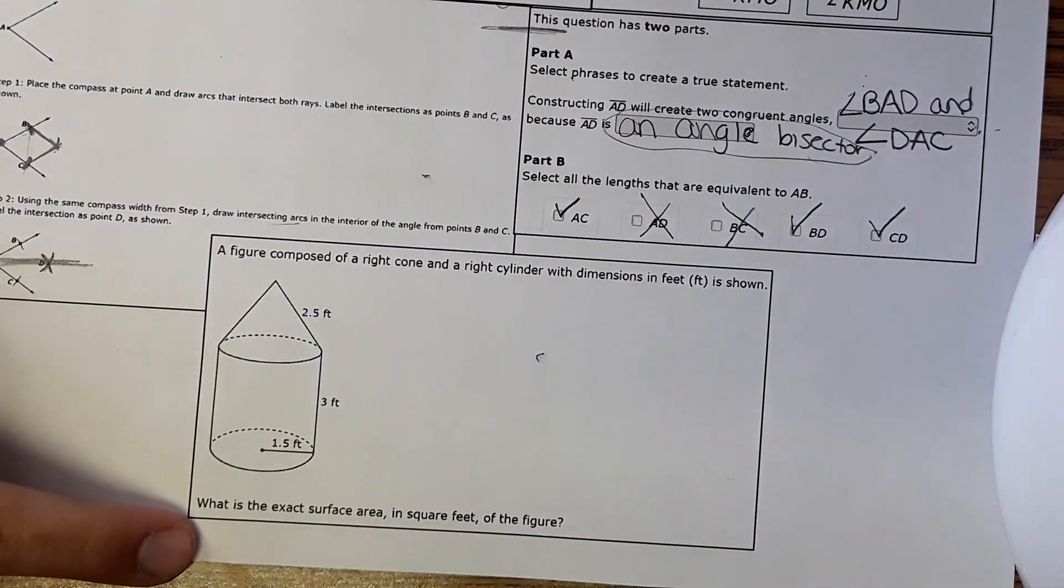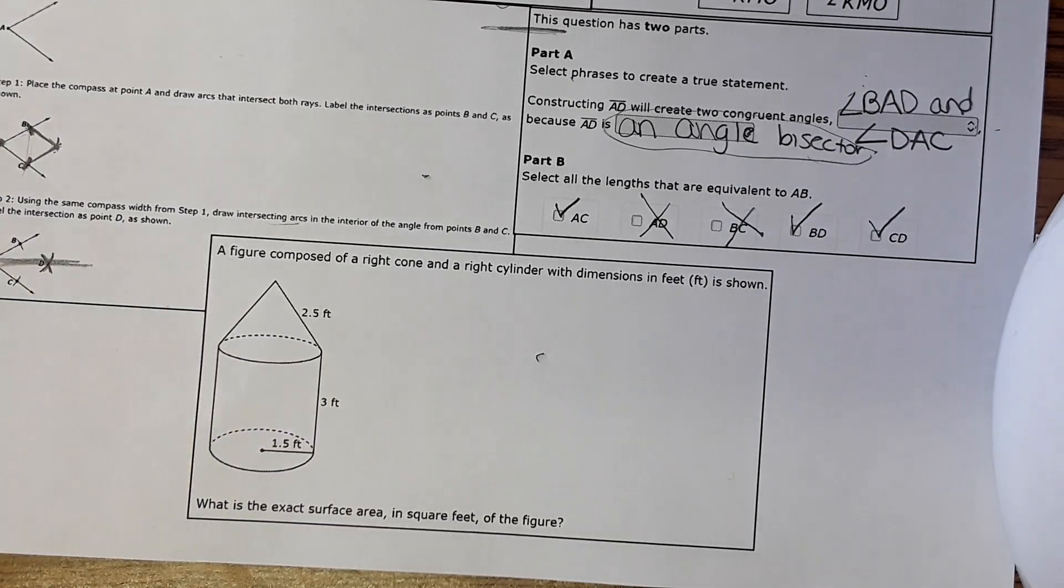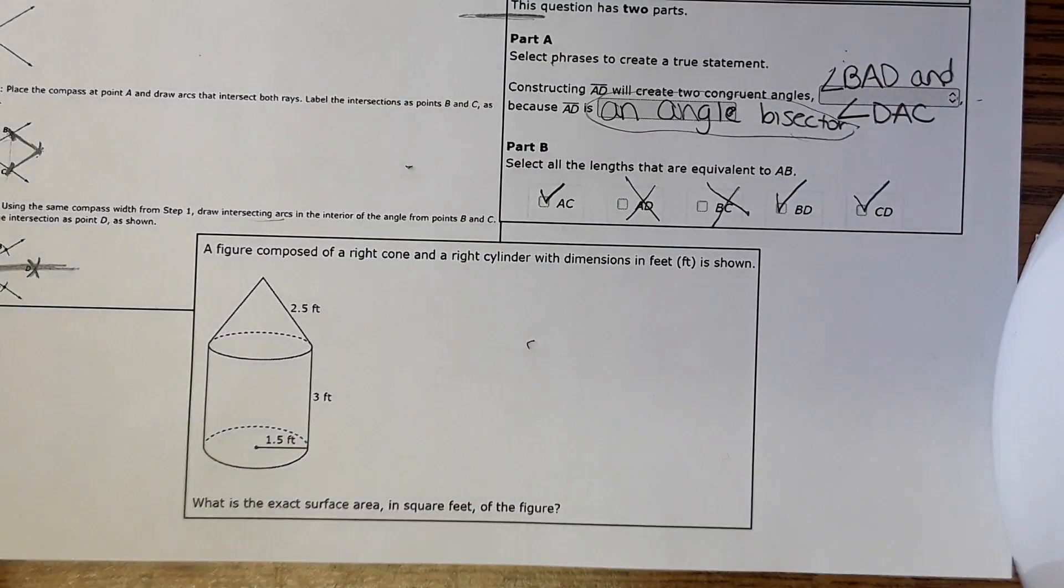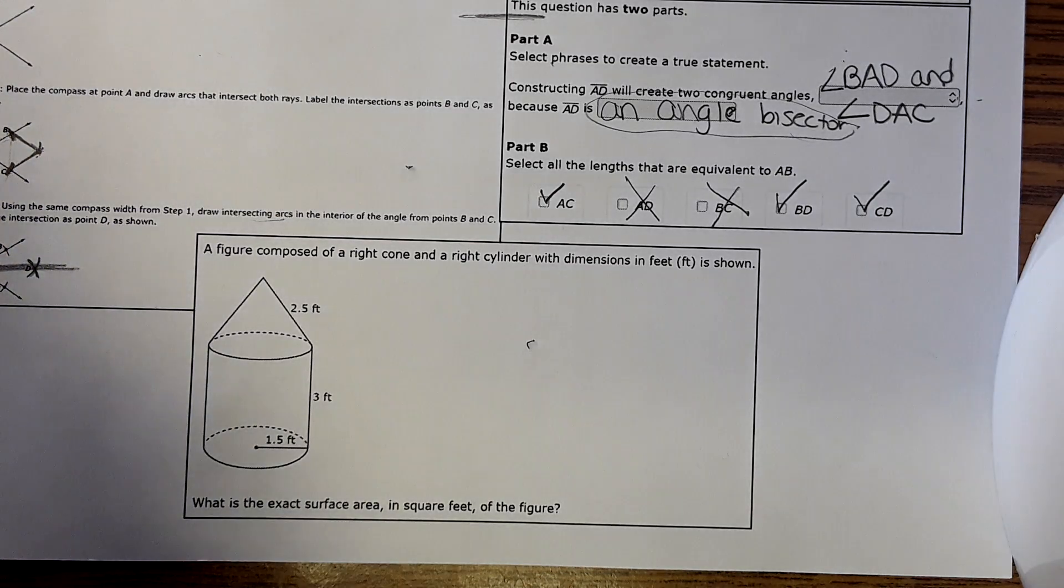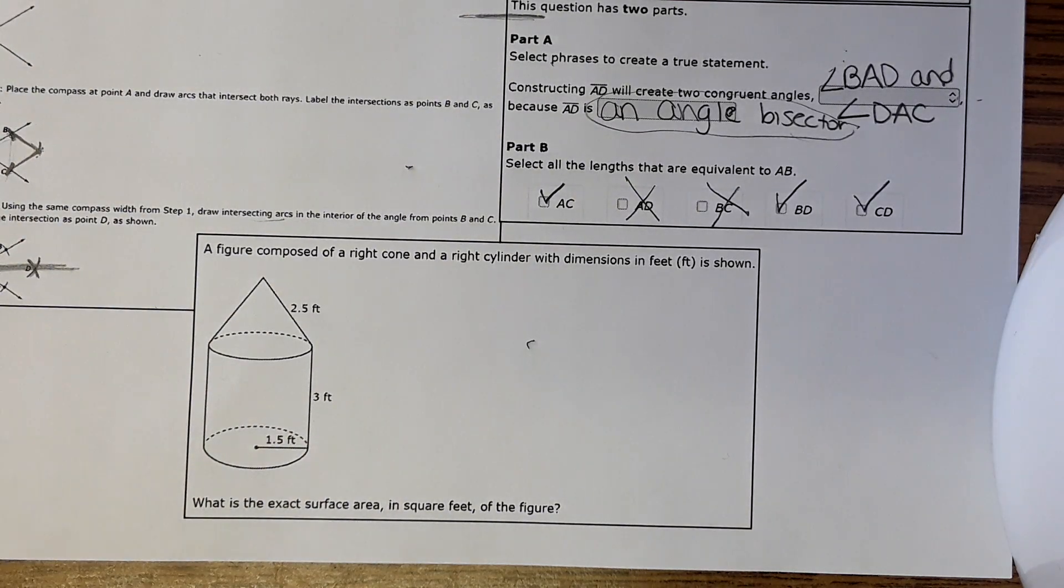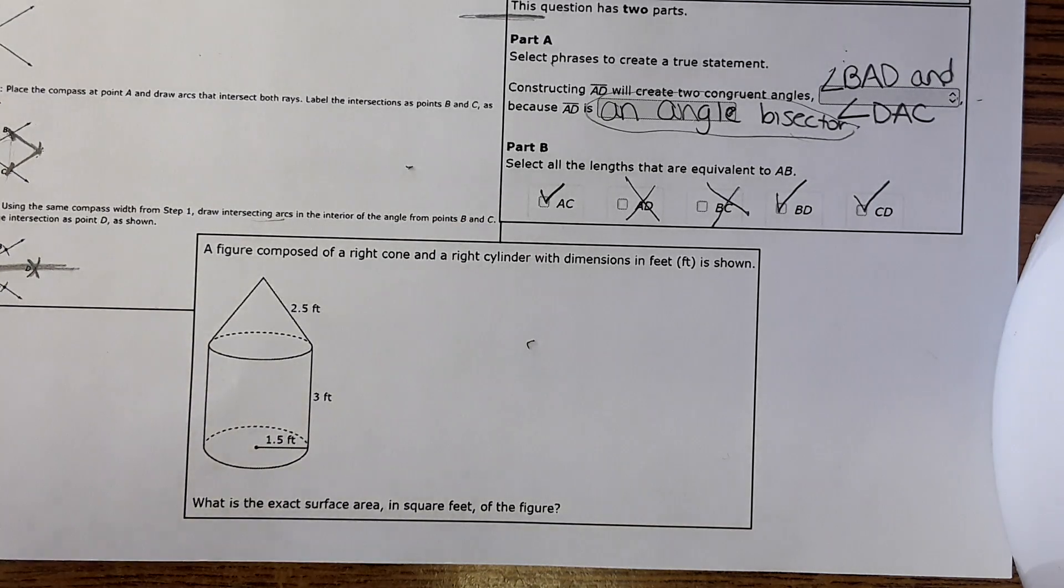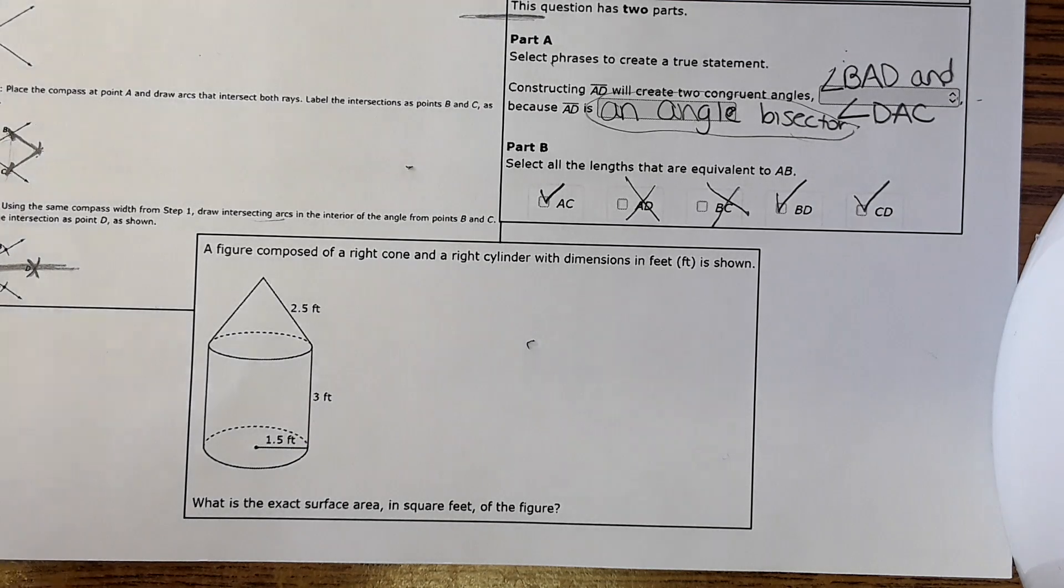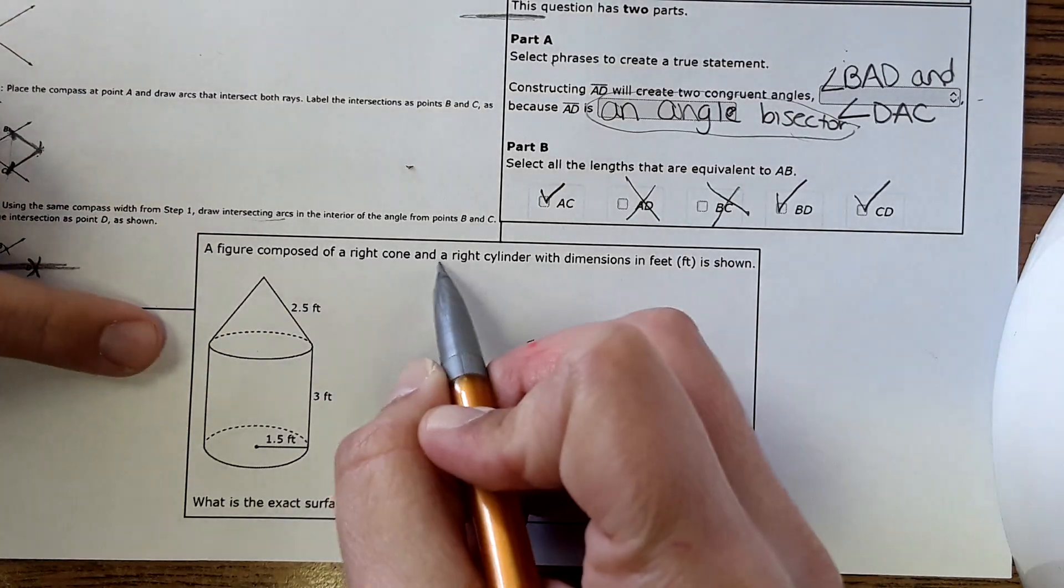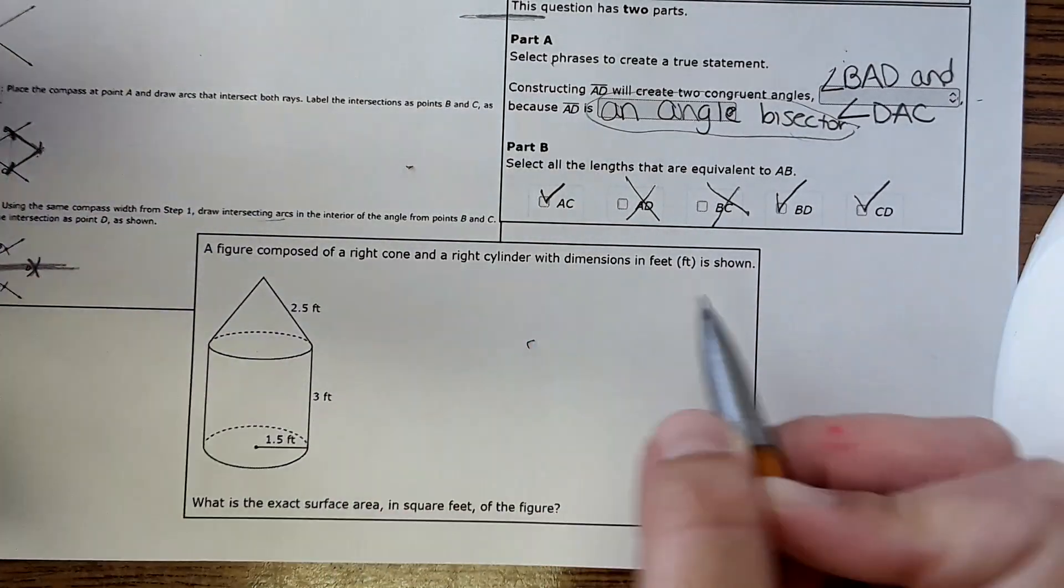Last but not least: a figure composed of a right cone and right cylinder with dimensions in feet is shown. What is the exact surface area in square feet of the figure? With this chapter we're doing volume and surface area and it's just begun to build the concepts. Surface area is something you've seen 6th and 7th grade. This is definitely a good example of what you would see on FSA where they really build the higher level thinking.